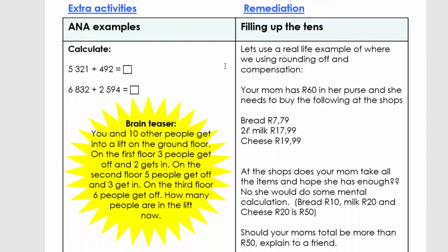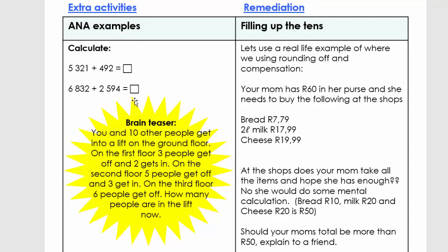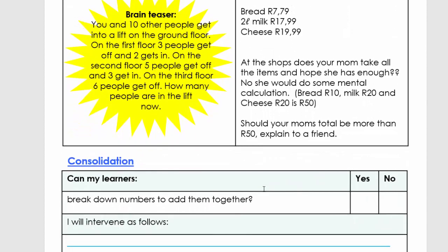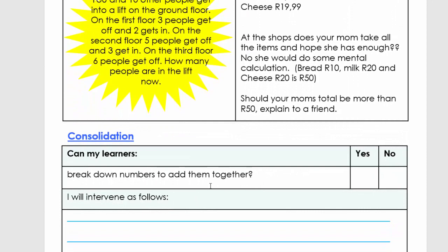So let's go then to the extra activities. Here again, what you have is you have questions and brain teasers or problem solving coming from previous exam papers. Remediation: we've got some real-life examples of how to fill up the tens. Maybe if a child works with real-life examples, you can support them to understand the importance of filling up the tens. Then what you're going to do is the consolidation. The consolidation, you're going to break down. You just have one question to say: can children break down numbers to add them together? Again, if it's yes, you can carry on with the next lesson. If it's no, you need to revisit, revise, revise, or you can contact SA Teacher.